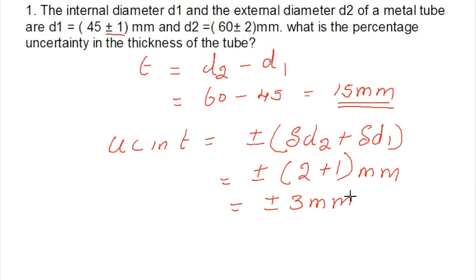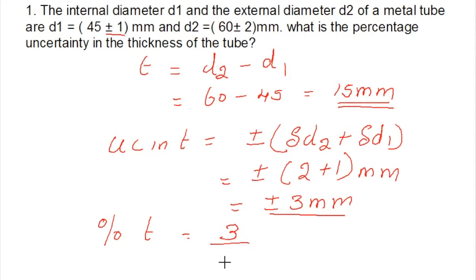So ±3 mm is the uncertainty in T. The percentage uncertainty in T is the uncertainty in T divided by the calculated value of T (15 mm) times 100%. That is 3 divided by 15 times 100%, which equals 20%. So 20% is the uncertainty in the thickness measured.